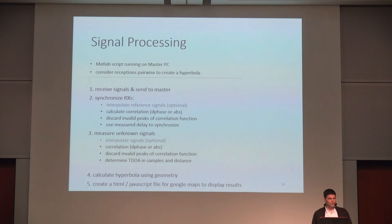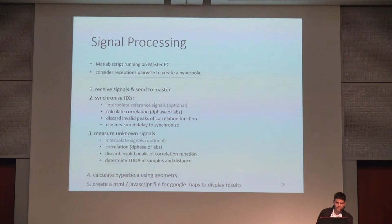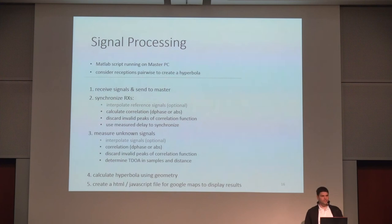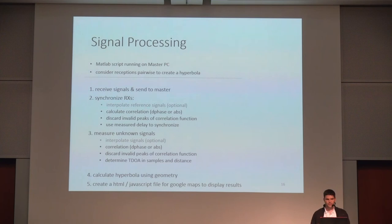The overall signal processing is done using a MATLAB script that considers receptions pairwise to create a hyperbola. First signals are received and sent to the master. Then they are synchronized using correlation on the DAB reference signal, discarding invalid peaks and using the measured delay to align the receptions. Then I measure the unknown signals using the same procedure. Finally I create a hyperbola using geometry and write the results into an HTML JavaScript file to display them in Google Maps. Interpolation was also tried to increase resolution but showed no improvement in practice.